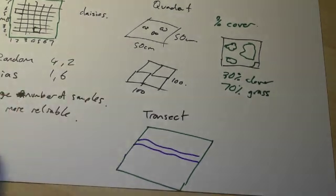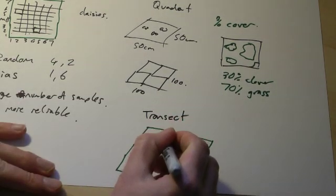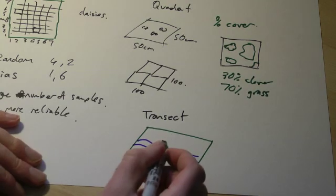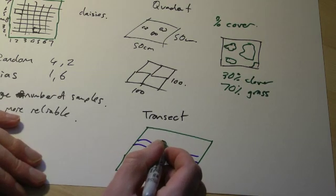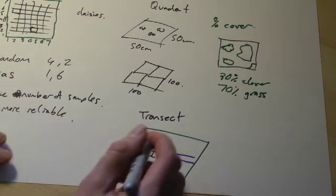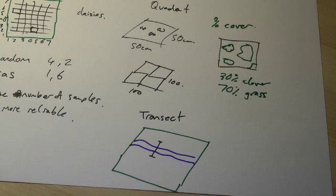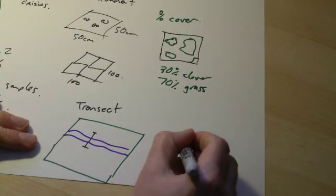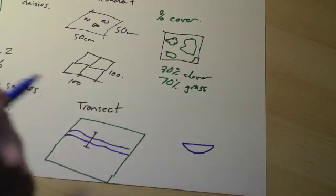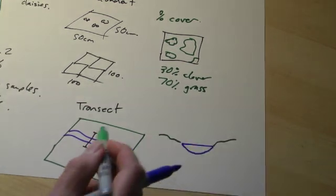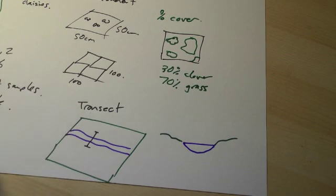What we would do with the transect is, you would take a line, and it might literally be a piece of string, and you could perhaps sample every metre or every two, it depends how big the thing is. What would then happen is, you'd build up a profile of what the plants were like. So you could literally, this is what it might look like, here's my stream. So I'm looking at this in a cross section now.